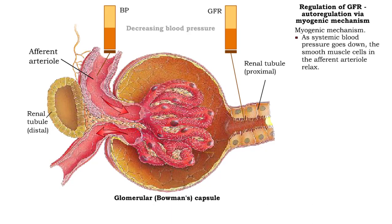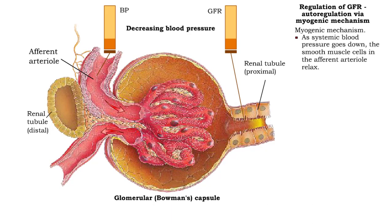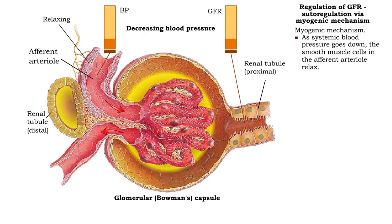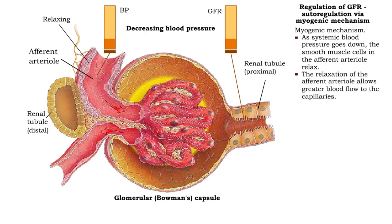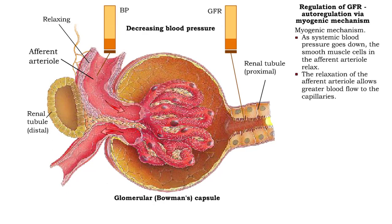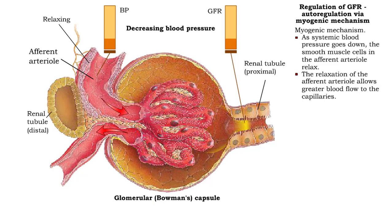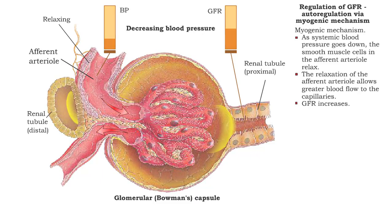As systemic blood pressure goes down, the smooth muscle cells in the afferent arterioles relax. The relaxation of the smooth muscle cells in the afferent arterioles increases blood flow to the glomerular capillaries. Glomerular filtration rate increases.